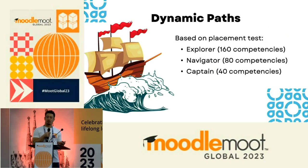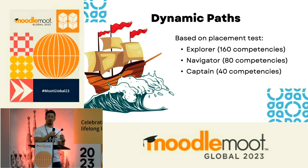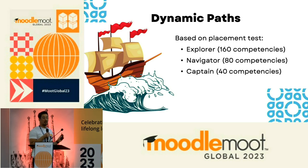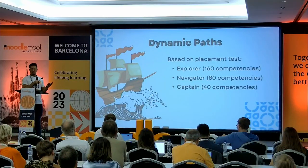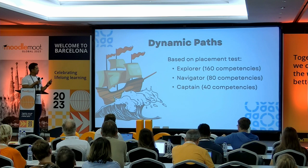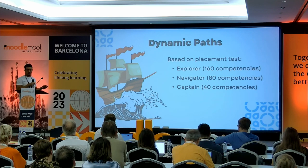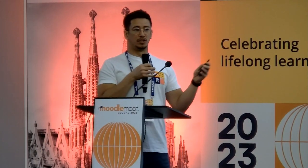Now we can start on how we actually implemented this. We have first the Explorer path, which covers all 160 competencies — this is for learners with absolutely no knowledge of entrepreneurial frameworks, business models, or lean canvas design. Based on a pretest at the beginning of the program, we assess which path users are most likely to benefit from. Then we have the Navigator path for people who already have some knowledge but would like to perfect it. And the Captain, which encompasses the more advanced and metacognitive skills for business knowledge. Based on the placement test, learners are distributed across these programs.